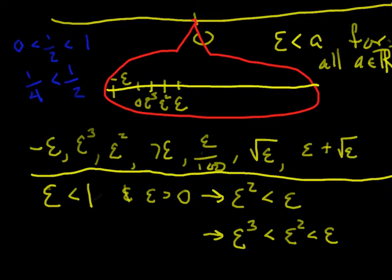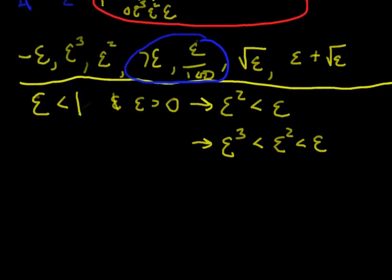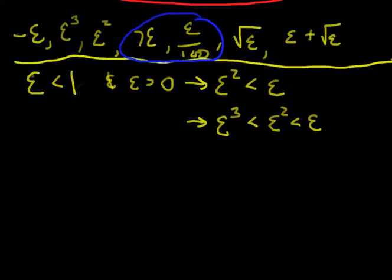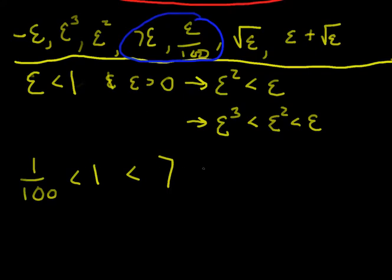So now let's take a look at multiples of epsilon. How about seven times epsilon, and you can also think of epsilon divided by one hundred, or epsilon times one over one hundred. We're going to look at these guys now using the same idea. We know that one over one hundred is definitely less than one, and definitely less than seven. So we've got that relationship, and epsilon is still greater than zero. Multiplying that inequality by epsilon tells me that epsilon over one hundred has to be less than epsilon, less than seven times epsilon.